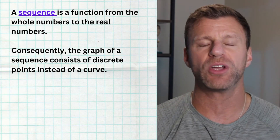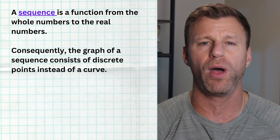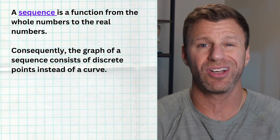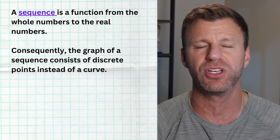When it comes to the graph of a sequence, what you're going to see is basically a bunch of discrete dots — a dot at each whole number input: one, two, three, four. There's nothing in between one and two because you're not allowed to plug in anything in between. Whereas a function might show a nice continuous curve because you can use all real numbers as inputs, a sequence will just show a dot at one, a dot at two, a dot at three, a dot at four, and so forth.